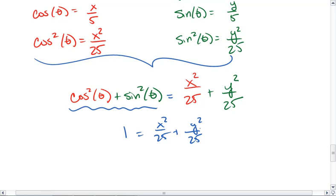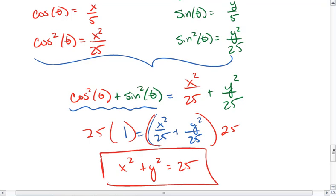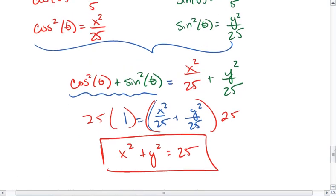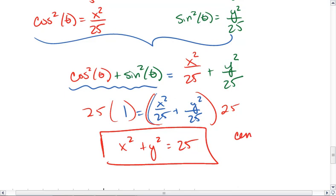Okay. I can then rearrange this. I can multiply both sides by 25. And I get x squared plus y squared equals 25 as my final answer. This is a circle. This is a circle with a center at 0, 0, and a radius of the square root of 25, which is 5.